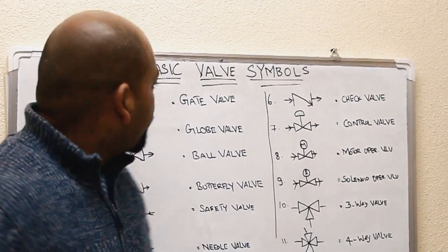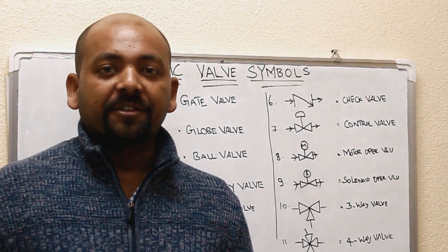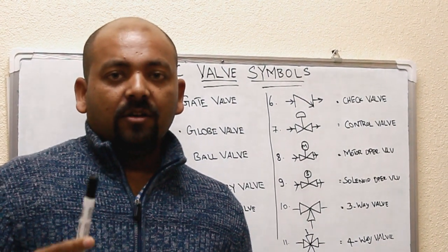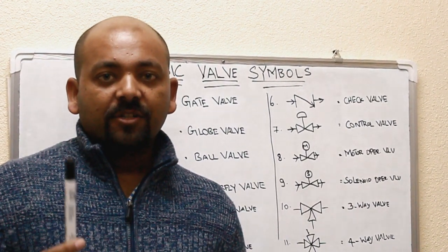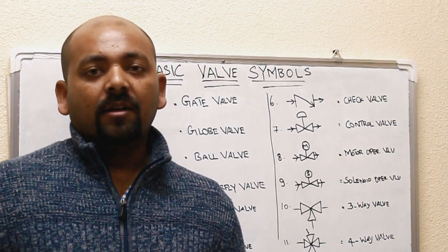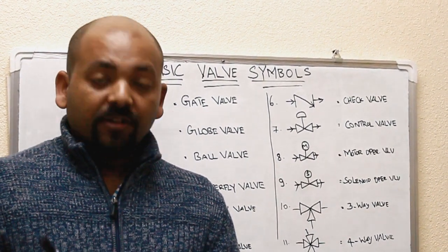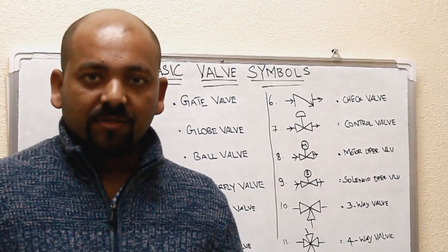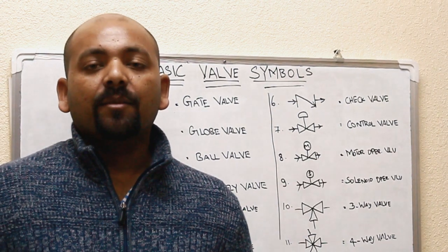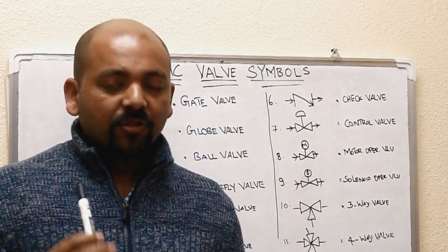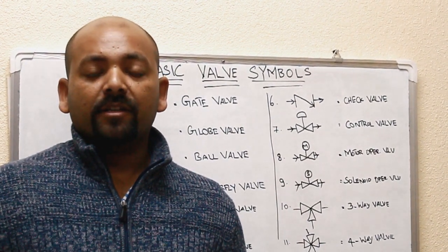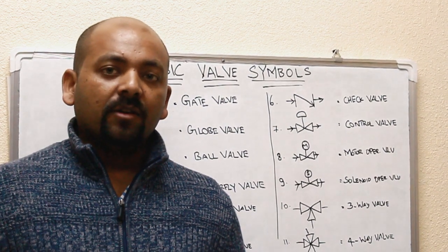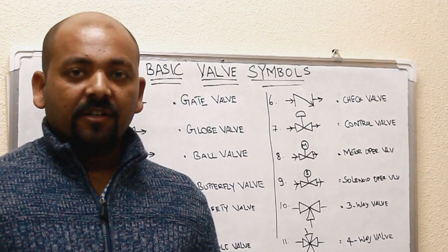And just go through the P&ID drawings you can get on Google and just compare it. You already covered the pipeline symbols and basic valve symbols. It's more than enough to understand the P&ID drawing. And those people who are working in the process industry, you can refer to the P&ID drawing with reference to the legend documents.